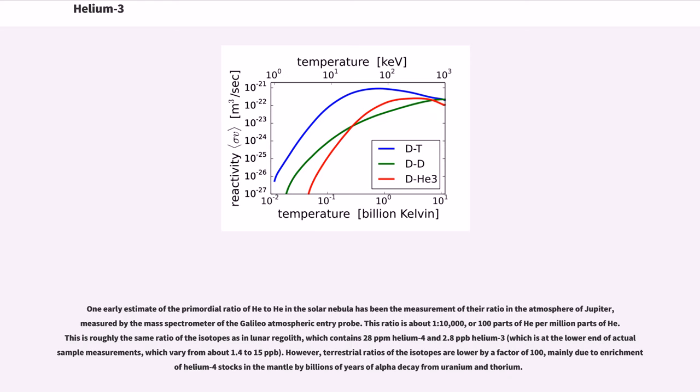One early estimate of the primordial ratio of He3 to He4 in the solar nebula has been the measurement of their ratio in the atmosphere of Jupiter, measured by the mass spectrometer of the Galileo atmospheric entry probe. This ratio is about 1 to 10,000, or 100 parts of He3 per million parts of He4. This is roughly the same ratio of the isotopes as in lunar regolith, which contains 28 parts per million helium-4 and 2.8 parts per billion helium-3, which is at the lower end of actual sample measurements, which vary from about 1.4 to 15 parts per billion. However, terrestrial ratios of the isotopes are lower by a factor of 100, mainly due to enrichment of helium-4 stocks in the mantle by billions of years of alpha decay from uranium and thorium.